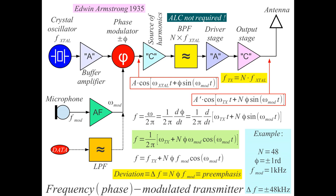The problem with such a transmitter is that phase modulation cannot be made for very large phase angles. We can make larger phase angles by concatenating many identical phase modulator stages one behind another, but still the frequency deviation Δf we obtain is not very large. So Armstrong had the clever idea to apply phase modulation at a relatively low frequency.